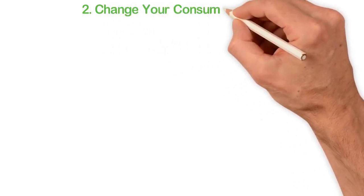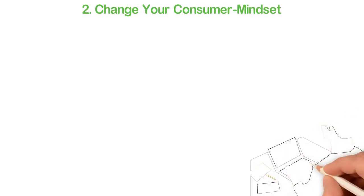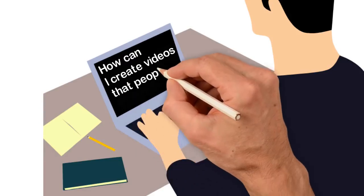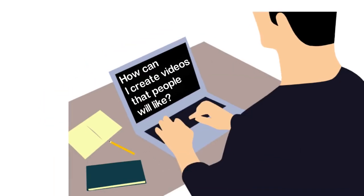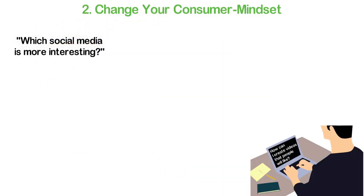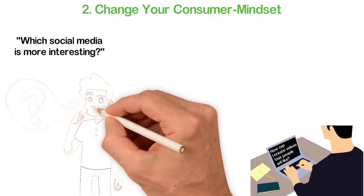Number two: Change your consumer mindset. When I got to know about Facebook, my first concern was: can I sell through it? When I got to know about how popular YouTube is, my first question was: how can I create videos that people would like? Consumers don't think that way. Instead, they think: which social media is more interesting? Theirs is to consume, so they are not thinking of how to serve people and make money from them.